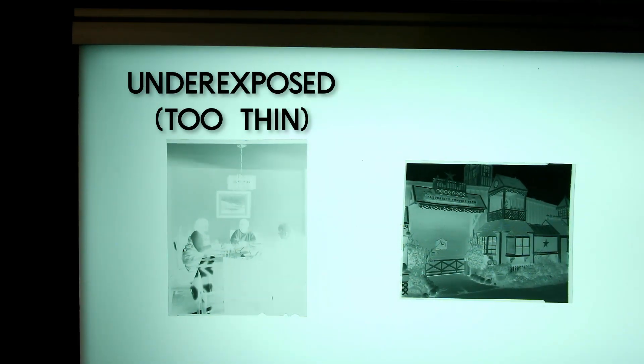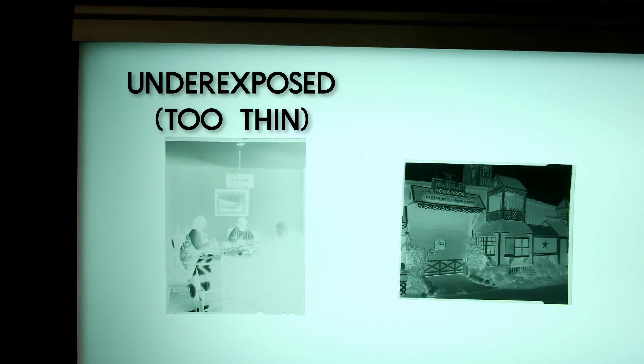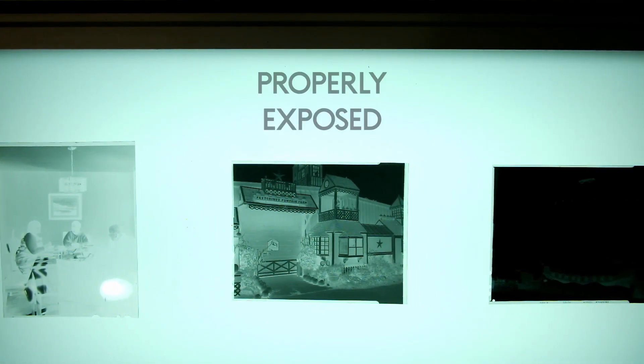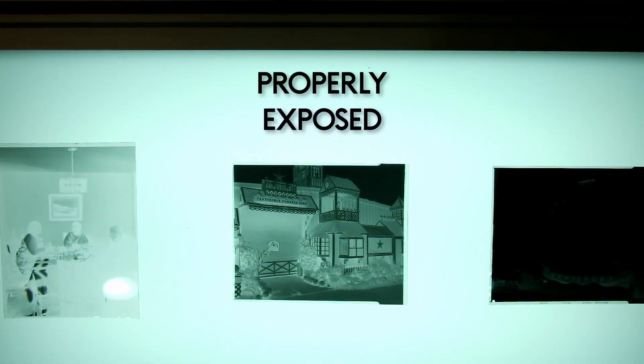So let me show you what happens when you mess this up. Over here on the left is an underexposed negative. We call that a thin negative, where not enough light was let into the camera. In the middle here is what a negative is supposed to look like. It's got a really beautiful range of tones from darkest to lightest, and when we go in the darkroom to print that, it's going to print really nicely.